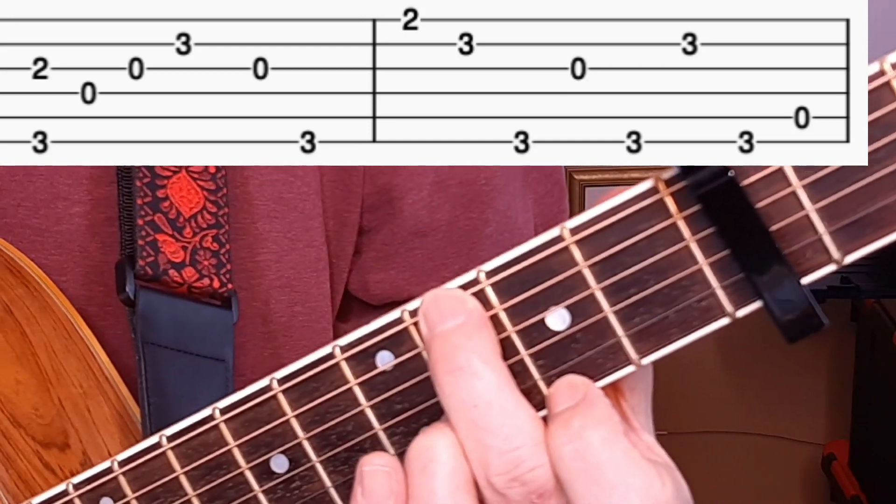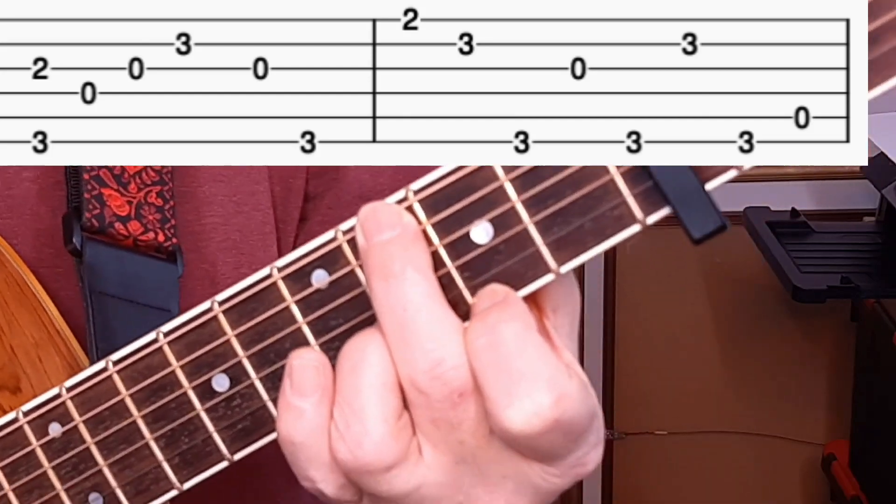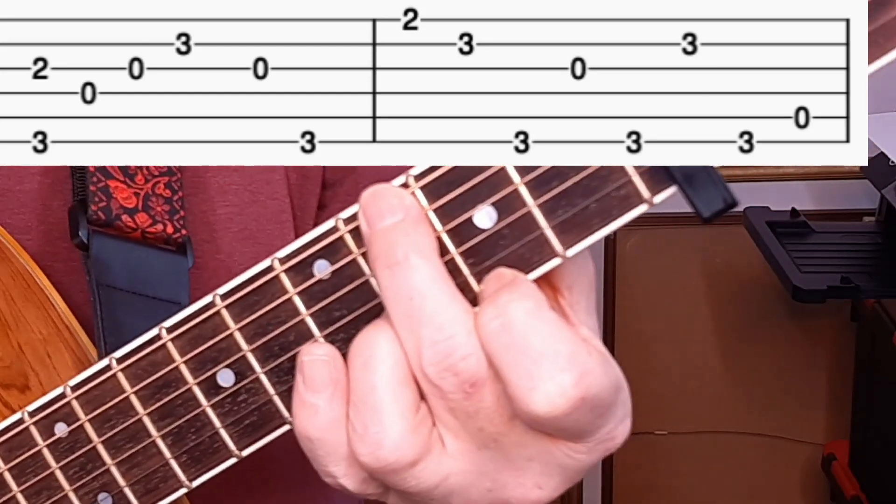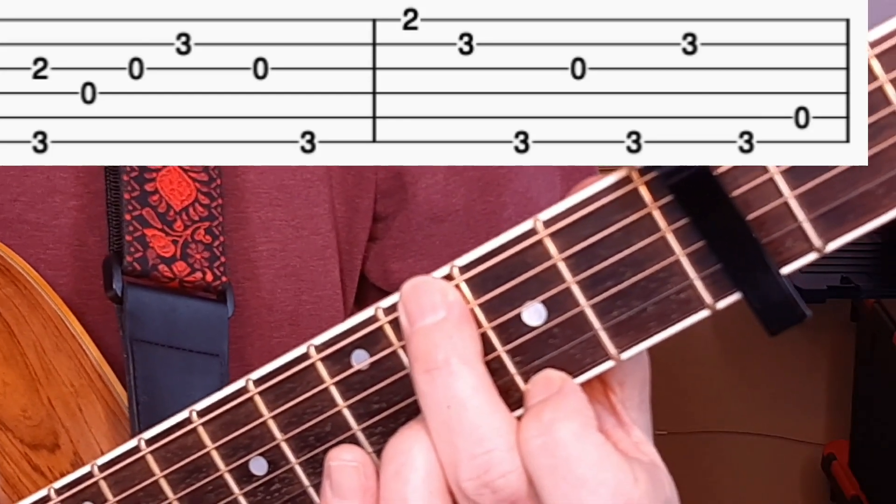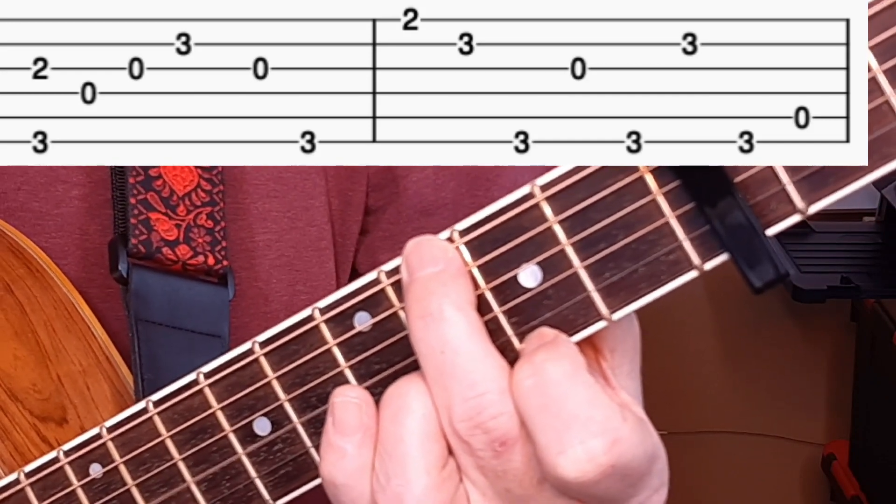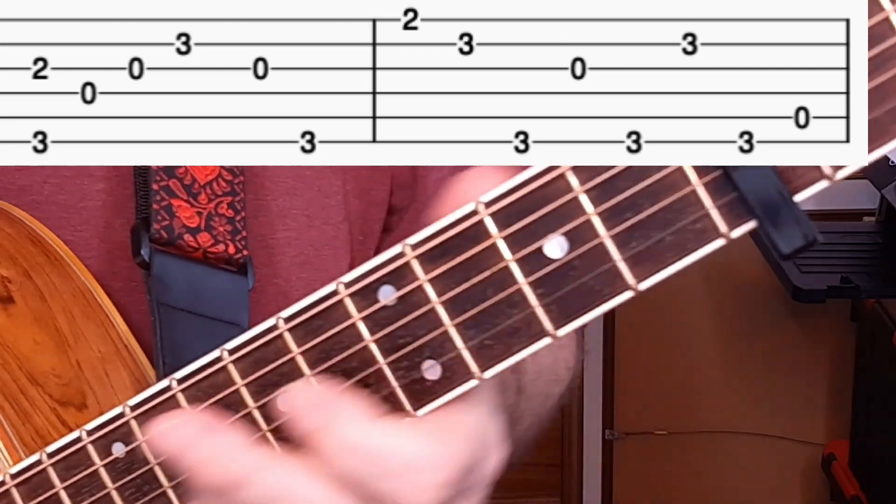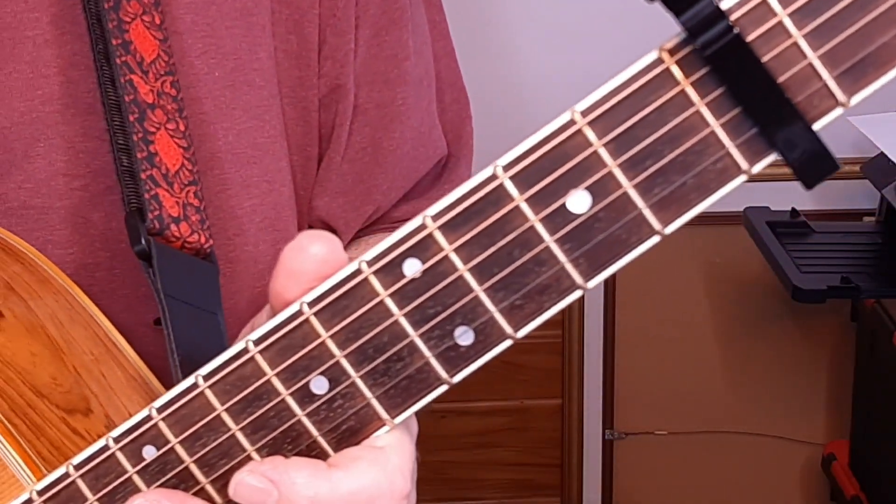Now we put the pointer down in this weird G grip. We put the pointer down on the second fret of the E string, and that gives us a G major seven, which is the closing chord of the whole thing. And there you go. That's the whole thing in a closeup.